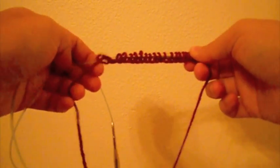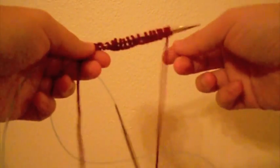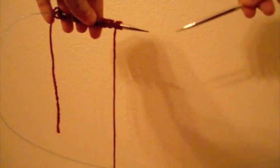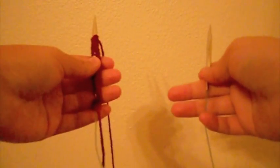Magic loop knitting is a way of knitting in the round without using double pointed needles. To use this technique you need a much longer cable than your project needs. The cable should be around 30 inches long.